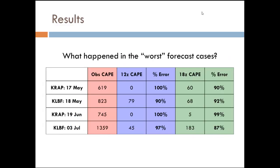One of the ways I tried to look at all these cases was to see what happened in the worst cases — when was our percent error the lowest? I chose the worst four cases to study in detail: the 17th of May in Rapid City, the 18th of May in North Platte, the 19th of June in Rapid City, and the 3rd of July in North Platte. In most of these cases, the forecast CAPE was extremely low, if not zero, resulting in about a 90 to 100 percent forecast error.